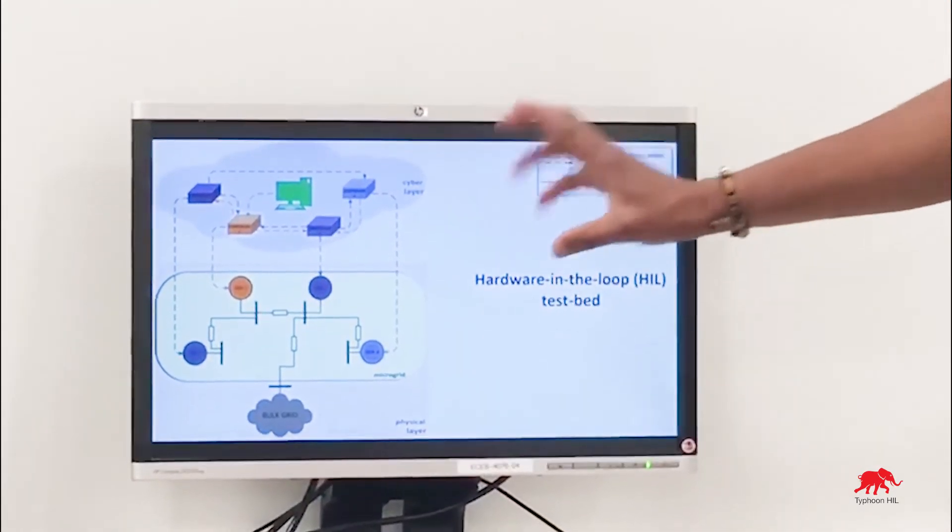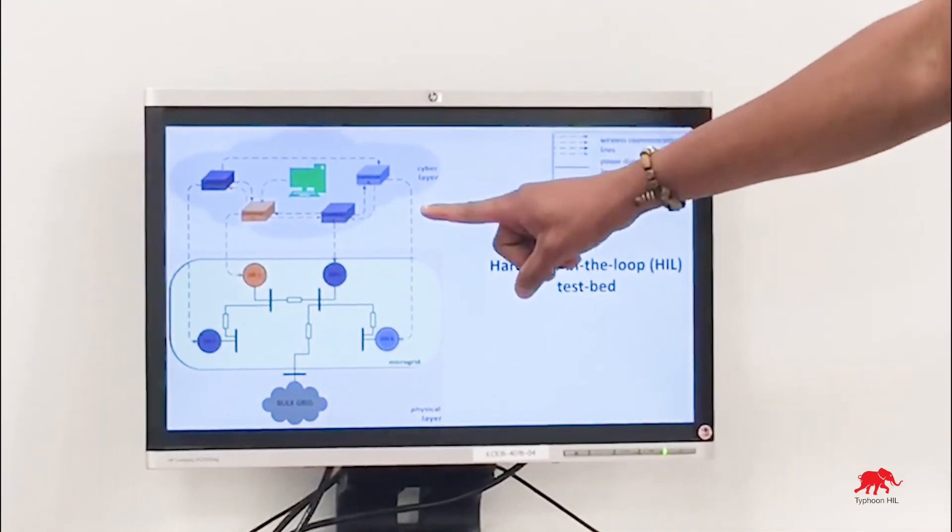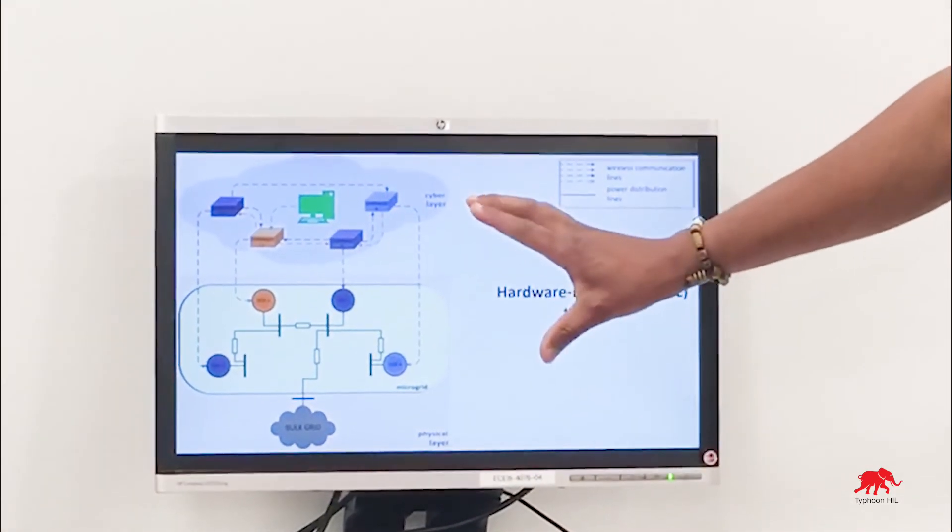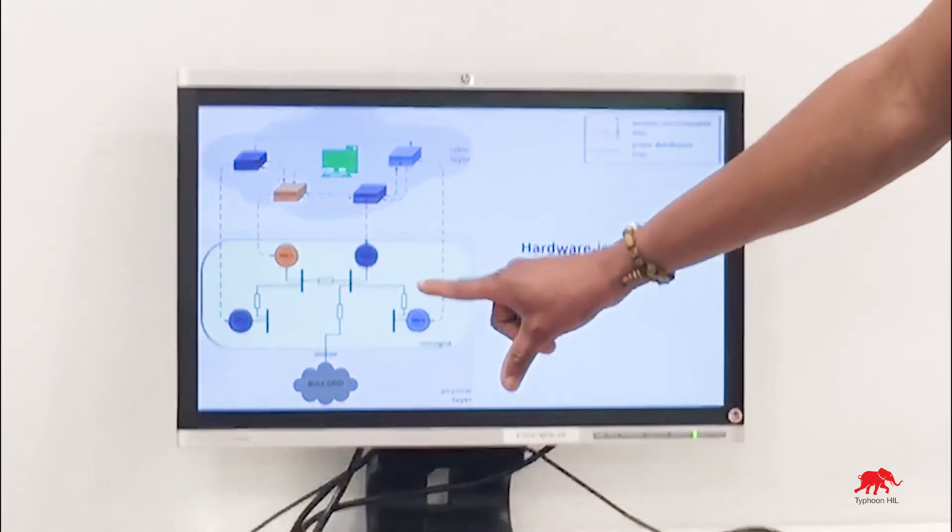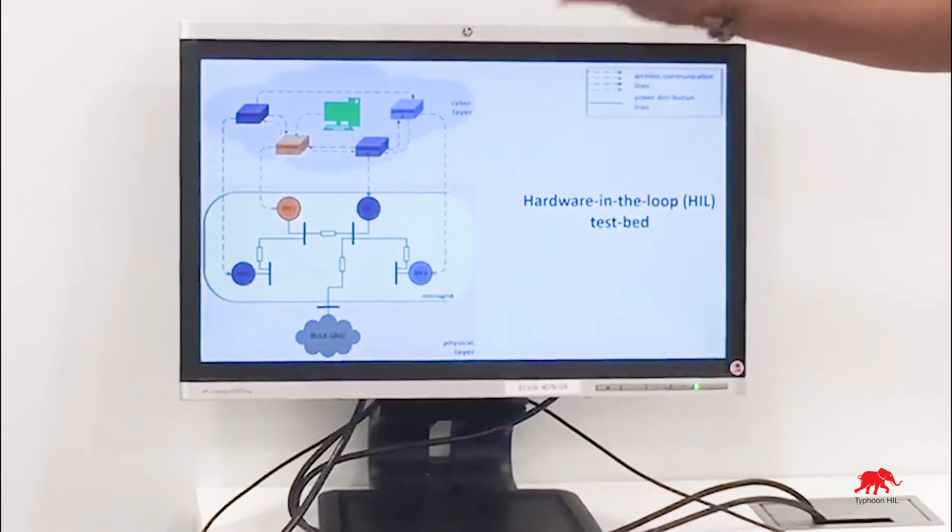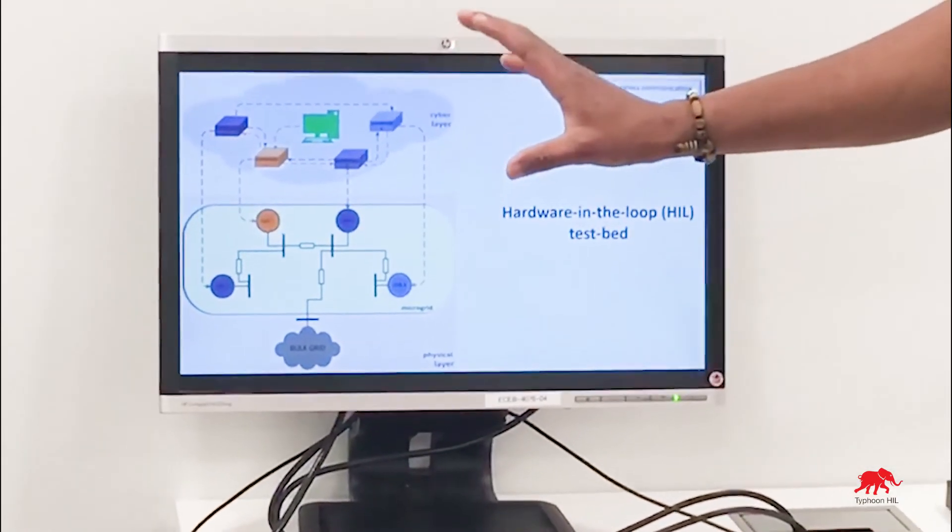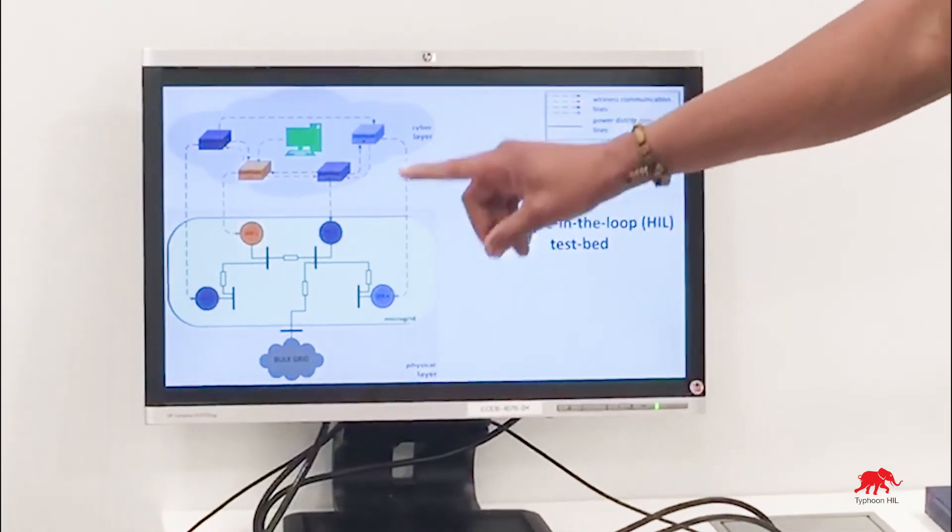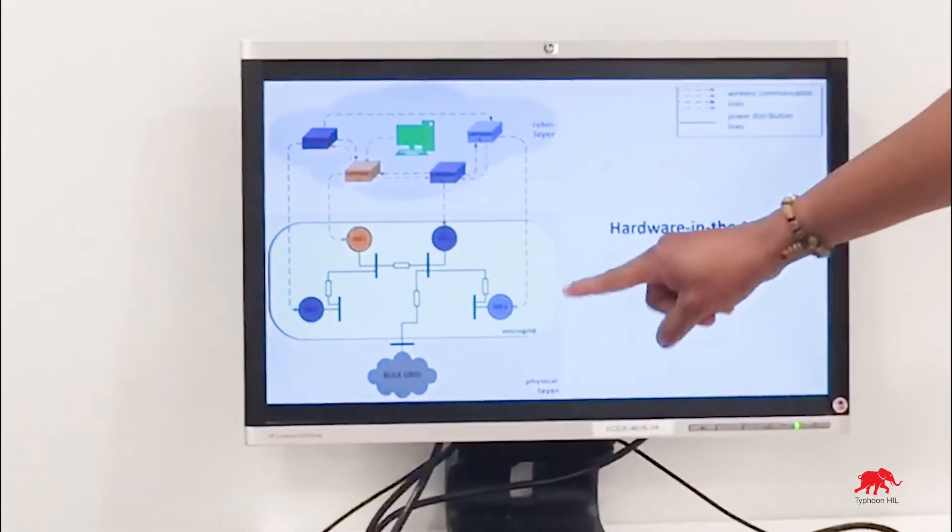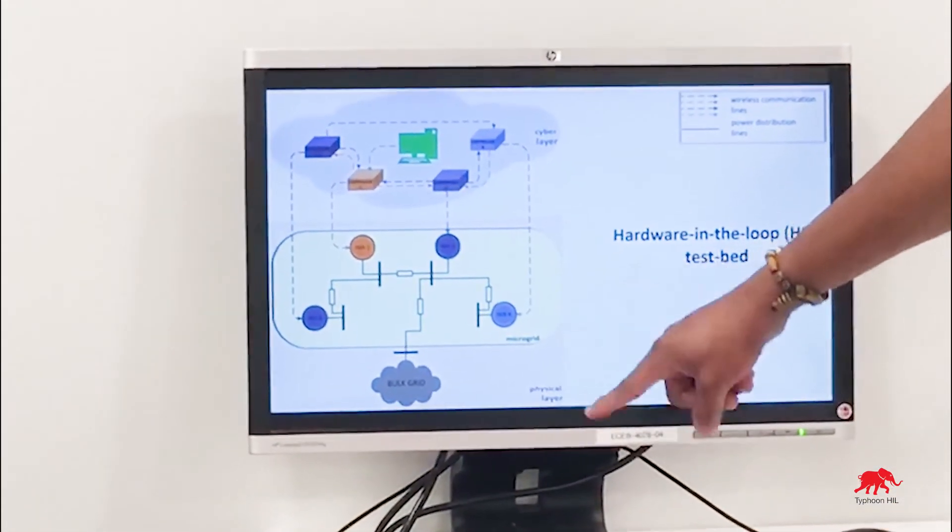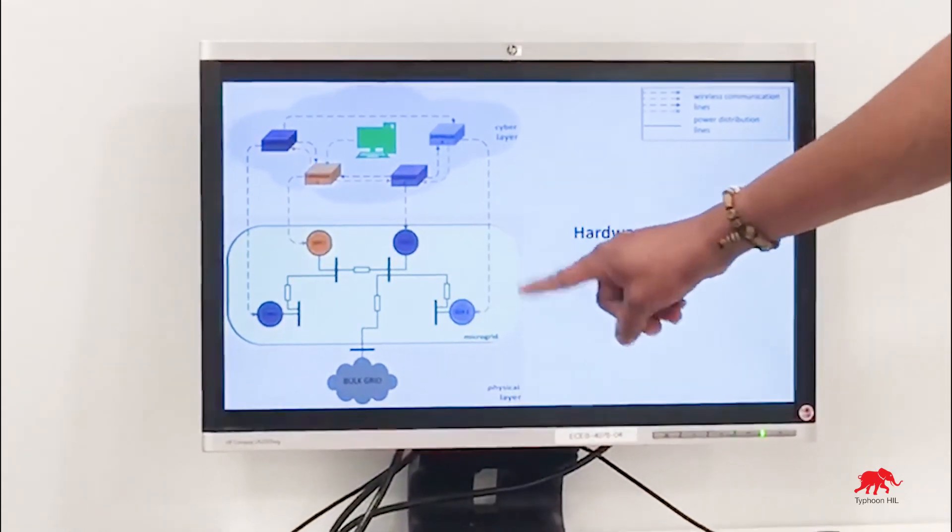Each controller iteratively communicates with its neighbors over a wireless communication network until optimal set points for the distributed energy resources are determined by the controllers. The optimal set points computed cause the power exchange between the microgrid and the bulk grid to match the regulation signal within the distributed energy resource ratings.